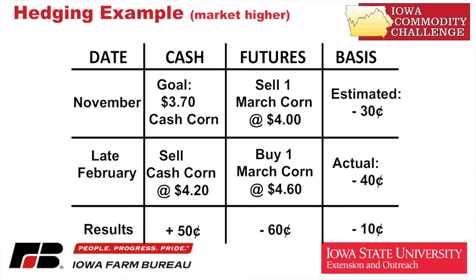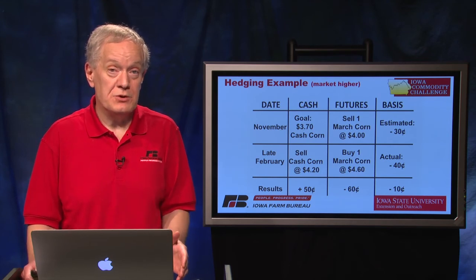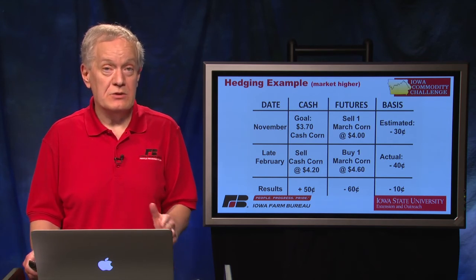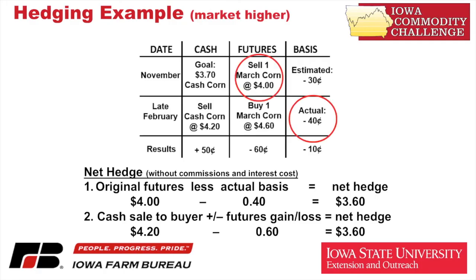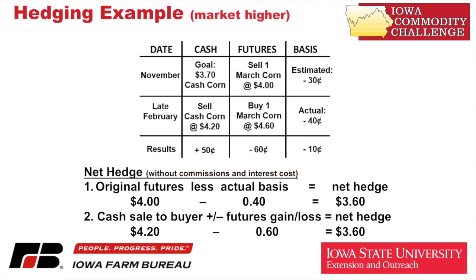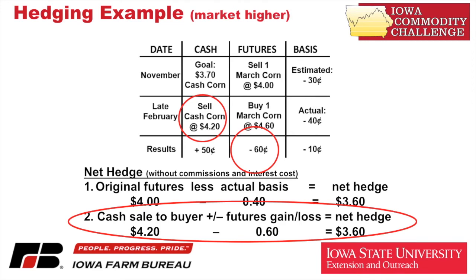We missed it by $0.10. It did do some risk management for us, but that estimated basis was a little bit off and actual basis ended up being a little bit wider. To figure the net: it's the $4.00 less the actual basis of $0.40, so it would be $3.60. Or we take the $4.20 we got from the buyer, subtract out the $0.60 we lost in futures, and we get $3.60. So in this example we missed our goal of $3.70, and it's all right there in the bottom right-hand corner of the diagram — a $0.10 miss on basis.